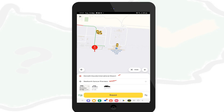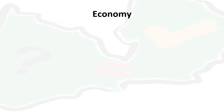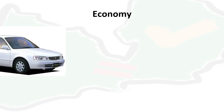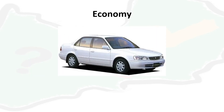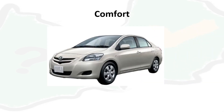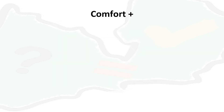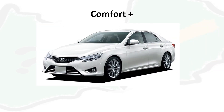Before you request a ride, check the price. There are three categories of vehicles you can book: Economy, Comfort, and Comfort Plus. Economy is the cheapest, and Comfort Plus is the most expensive. You can expect any car on Economy; Comfort offers an average clean and comfortable car; and Comfort Plus offers a comfortable, clean, and new car with air conditioning working well.